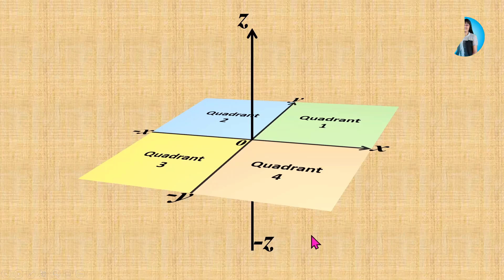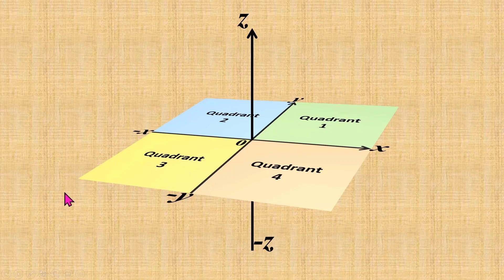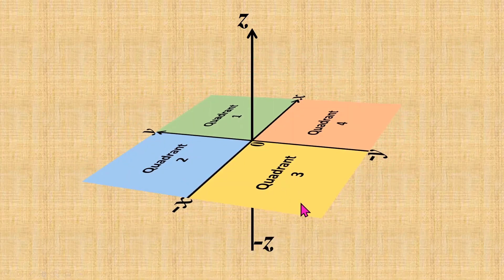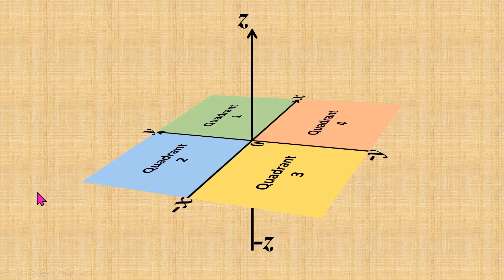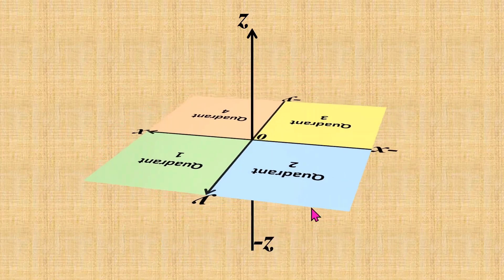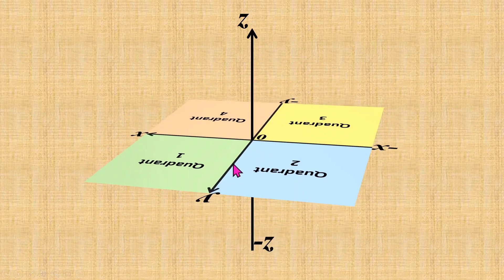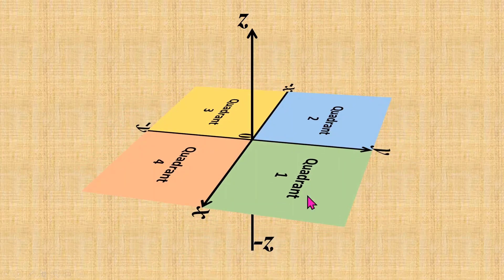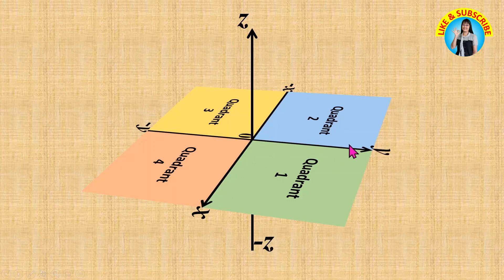Any three-dimensional object can be viewed from different directions. For example, this diagram can also be viewed from quadrant 3 or quadrant 2. From quadrant 2, this direction is positive Y, this is negative Y, this is negative X, and this is positive X. But most of the time, I would like to view the three-dimensional diagram from the first quadrant, where this direction is positive X, this direction is positive Y, this is negative X, and this is negative Y.